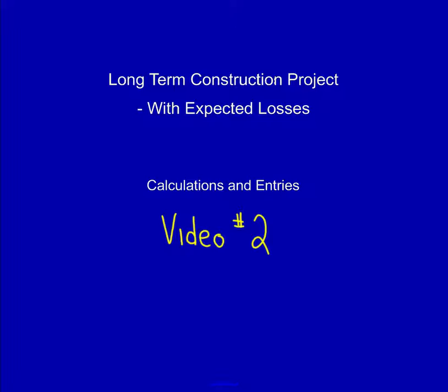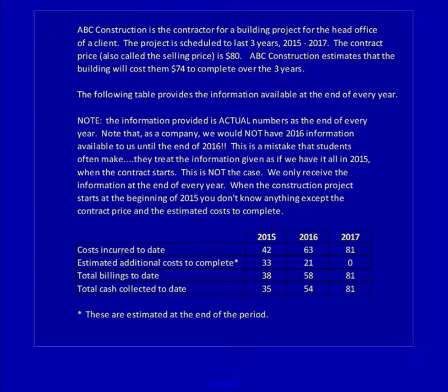Hi, Els here. Today we're going to continue with long-term construction projects with expected losses — both the calculation entries and the financial statement presentation. In 2016, we're going to use the same chart process that we used for 2015. We'll be using the information for the end of 2016 that was given in the question, so be sure you've downloaded the question from my Dropbox. Alright, let's get started.